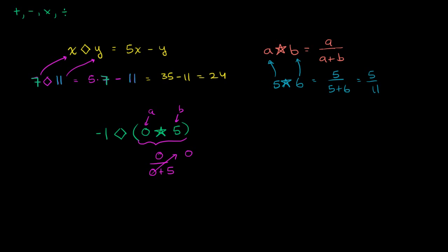So this whole expression simplifies to negative 1 diamond, this diamond right over here, diamond 0. And now we go to the definition of the diamond operator. Well, that's 5 times the first number in our operator, the first term that we're giving the operator. So 5 times that. So it'll be 5 times negative 1.